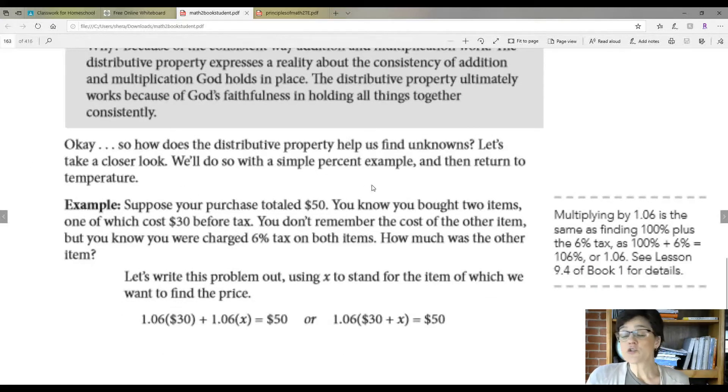So then how does the distributive property help us find the unknowns? Let's take a closer look. We're going to use a percentage problem first. Suppose your purchase totaled $50. You know you bought two items, one of which was $30 before tax. You don't remember the cost of the other item, but you know you were charged 6% tax on both items. How much was the other item?